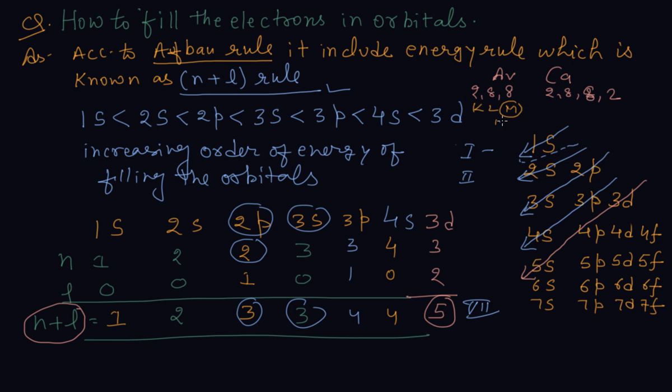Because the energy of the N shell (4s) is less than the M shell's 3d orbital. That's why after 3p, electrons go to 4s, which is the N shell, not to 3d.